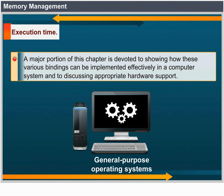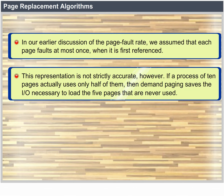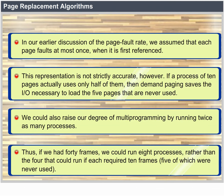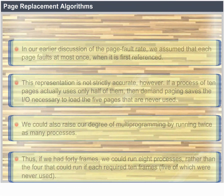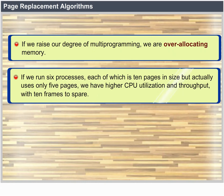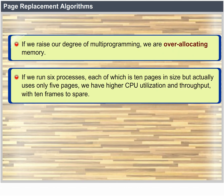Page replacement algorithms. In our earlier discussion of the page fault rate, we assumed that each page faults at most once when it is first referenced. If a process of 10 pages actually uses only half of them, then demand paging saves the I/O necessary to load the 5 pages that are never used. We could also increase our degree of multiprogramming by running twice as many processes. Thus, if we had 40 frames, we could run 8 processes rather than 4. If we run 6 processes, each of 10 pages but actually using only 5, we have higher CPU utilization and throughput with 10 frames to spare.